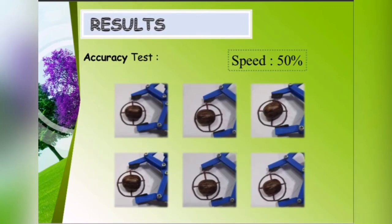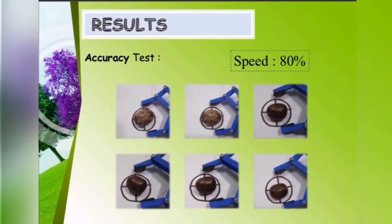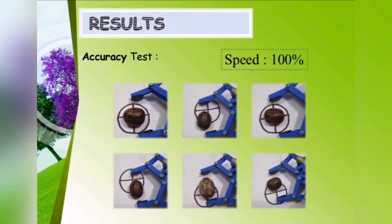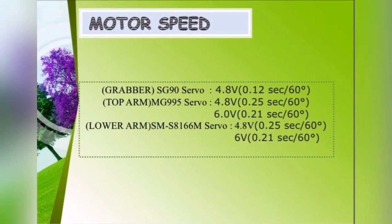Accuracy test. At 50% speed, the accuracy is high and the seed did not miss the target. After that, we increased the speed to 80%. The speed increase did not affect the accuracy significantly. Finally, at 100% speed, the rubber seed planter shows inaccuracy.